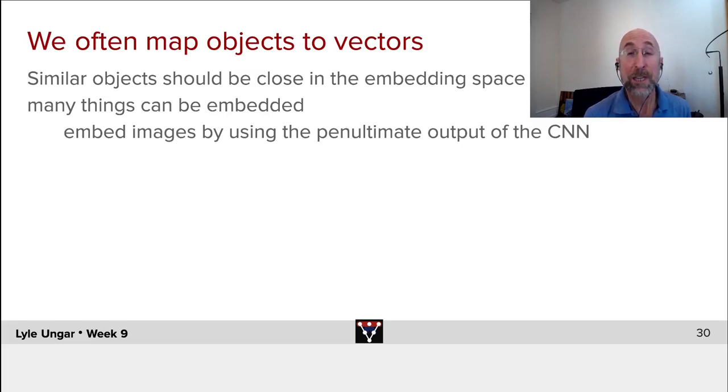You find that the embedding, the outputs of the neural net activations, are in fact more similar for two images that are both elephants or both plants than in raw pixel space. So it's useful to embed even images that are already vectors.